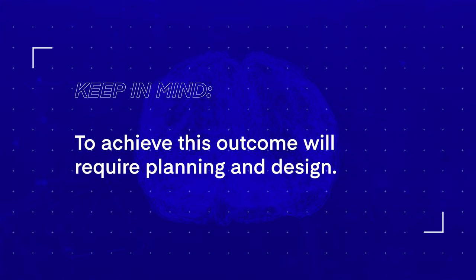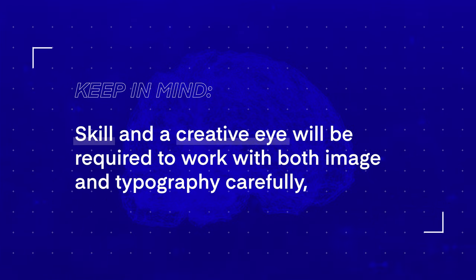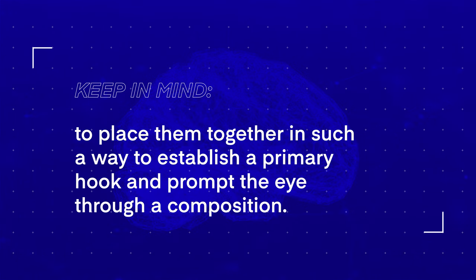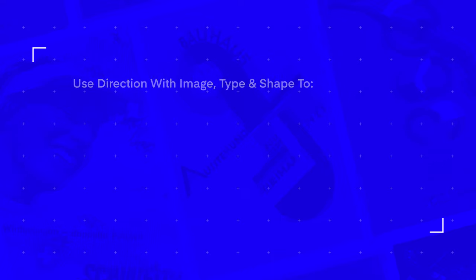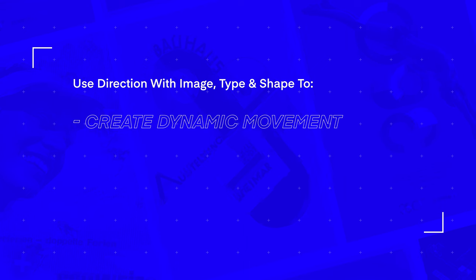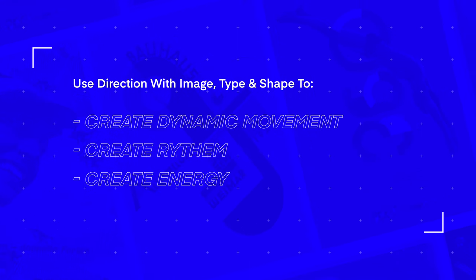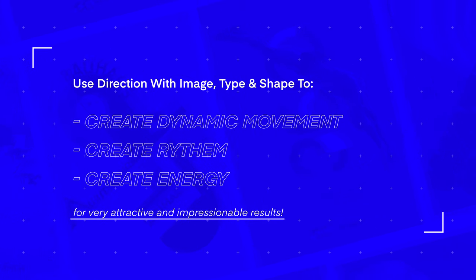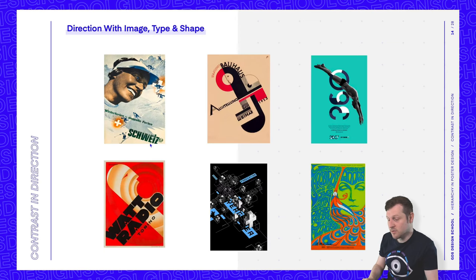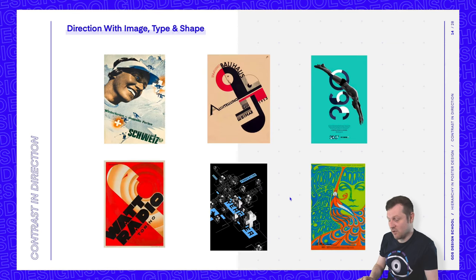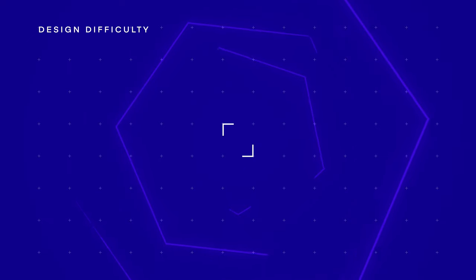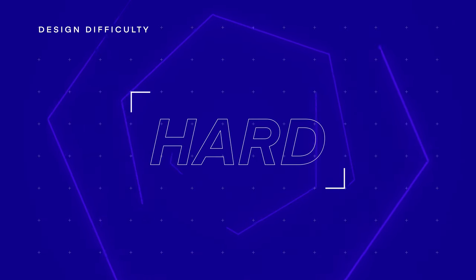To achieve this outcome will require planning and design. Skill and a creative eye will be required to work with both image and typography carefully to place them together in such a way to establish a primary hook and prompt the eye through a composition. This approach can be taken when you want to create dynamic movement, rhythm, and energy in your composition. If done well, this can create very attractive and impressionable results. The difficulty level for this technique is hard.